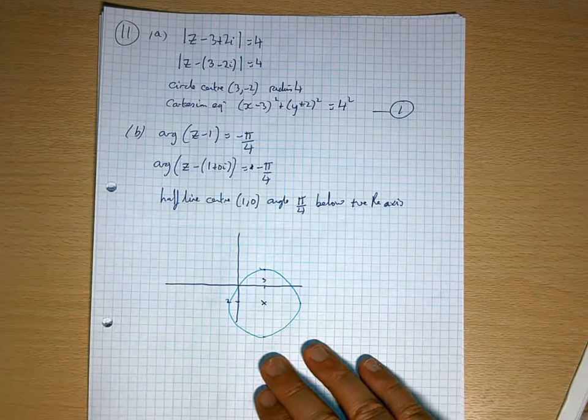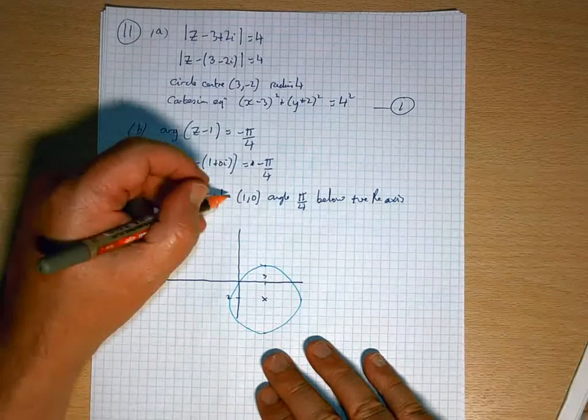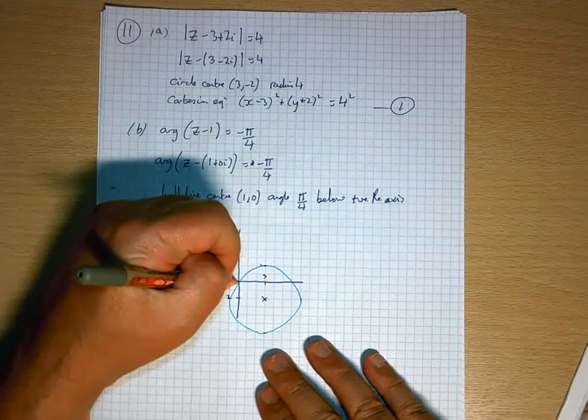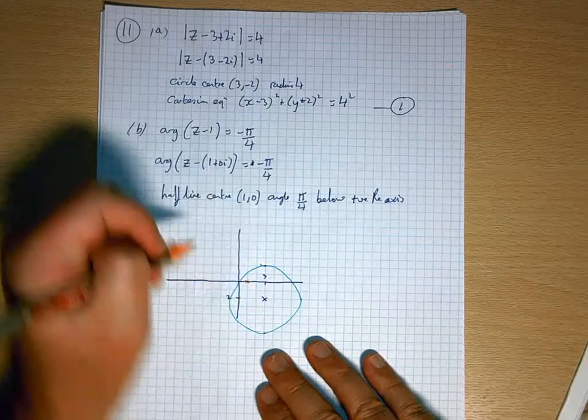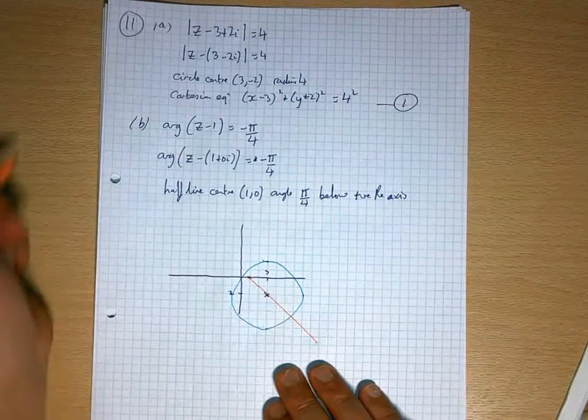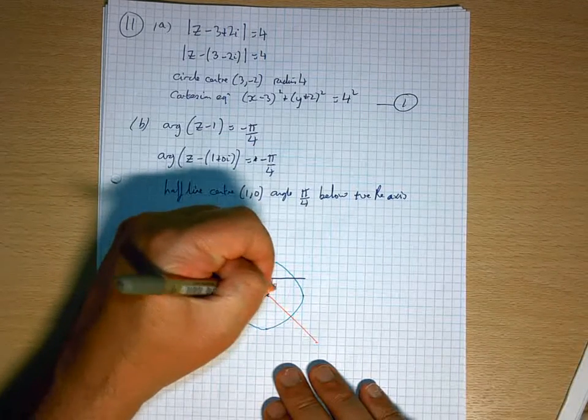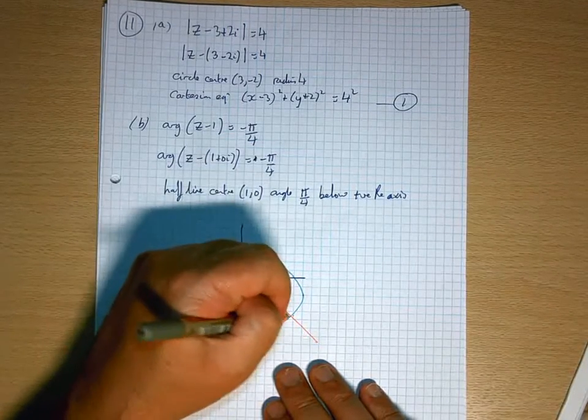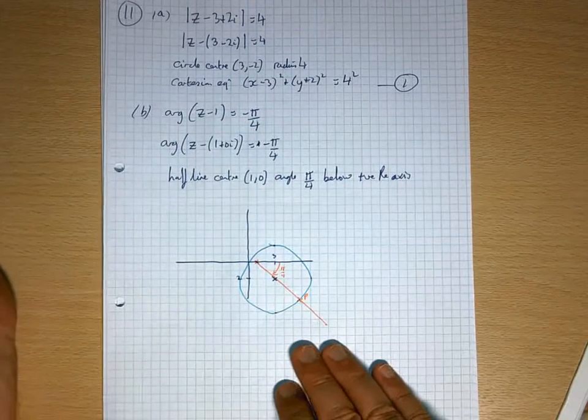And my half line is going from 1, 0, and is going like that. So that's the point that I'm looking for there.